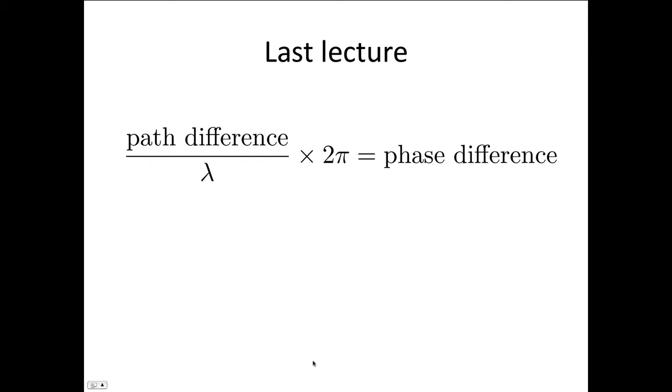We also use the equation: the path difference over λ times 2π equals the phase difference to solve problems. This equation can only be used if the two waves have the same initial phase difference and also they have the same frequency and wavelength. If they don't, then you'll need to modify this equation.